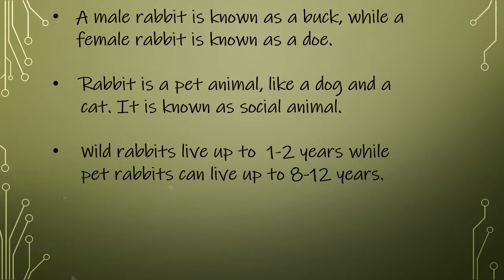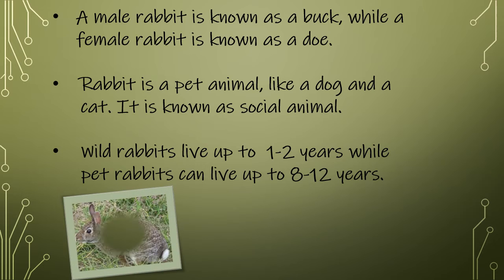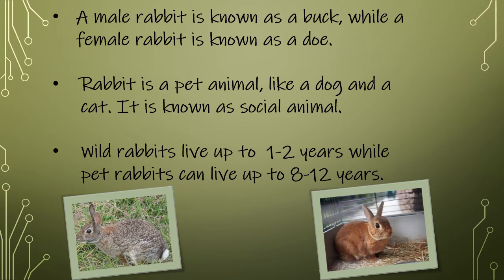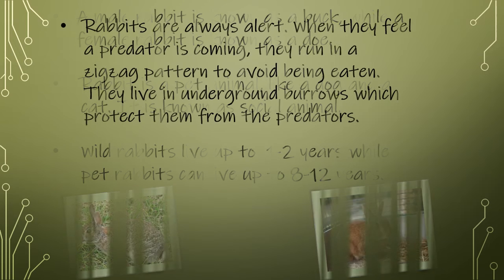A male rabbit is known as a buck while a female rabbit is known as a doe. Rabbits are pet animals like dogs and cats and are known as social animals. Wild rabbits live up to one to two years, while pet rabbits can live up to eight to twelve years.